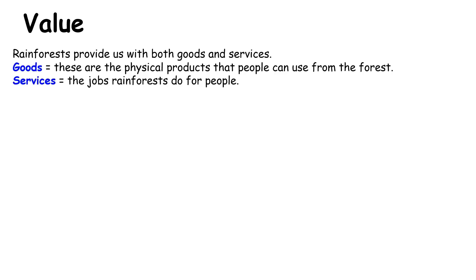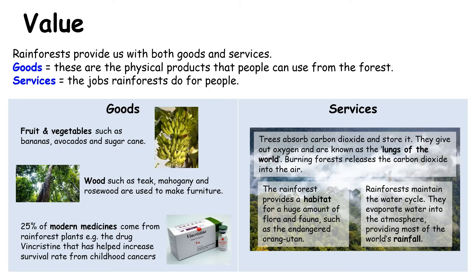The next section is the value of the rainforest — why should we protect it? We can look at two categories: goods are the physical products people can use from the forest, and services are the jobs that rainforests do for us. From the rainforest we can get fruit and vegetables, a huge amount of different kinds of wood, and 25% of modern medicines come from rainforests. One to highlight is the drug vincristine, which has helped increase the survival rate for children suffering from cancer.